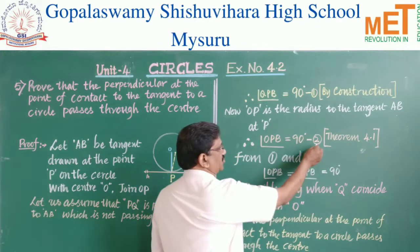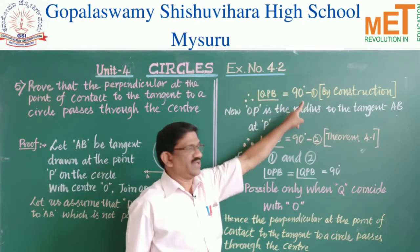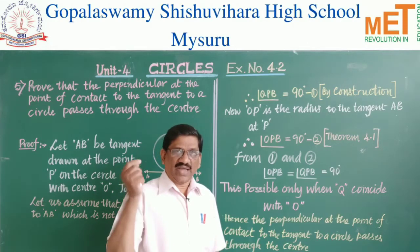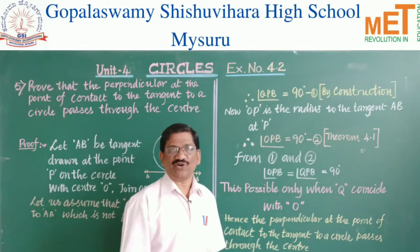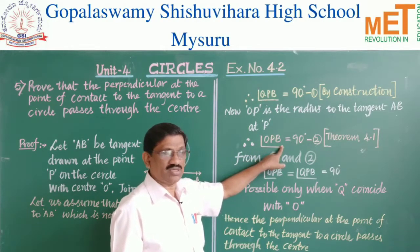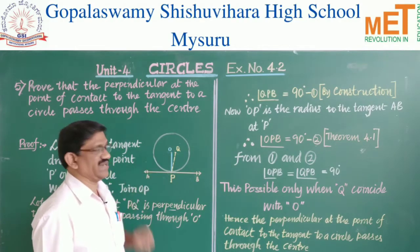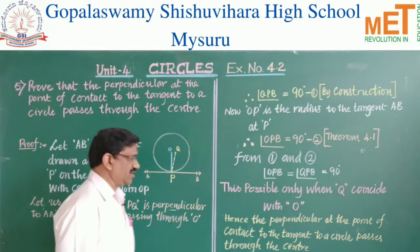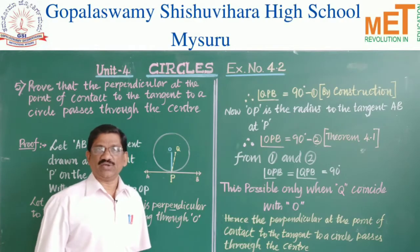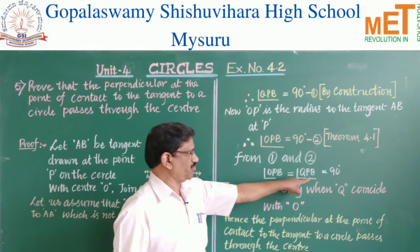Comparing equations one and two: QPB equals 90 degrees and OPB equals 90 degrees. Is it possible to have two lines both perpendicular to the same line at the same point? No — that is a contradiction. It is not possible to have two perpendicular lines at the same point for the same line segment.